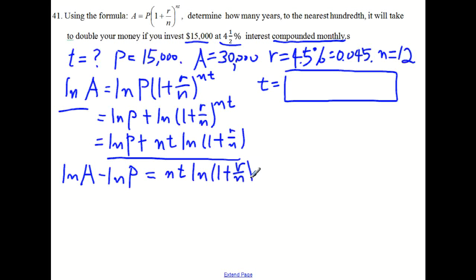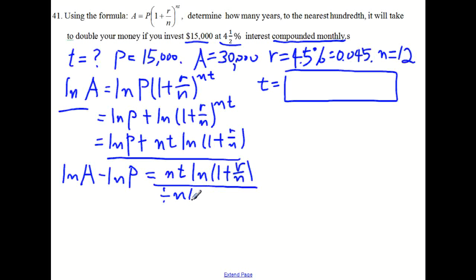Now, we have to isolate t, we have to remove these two factors, n and ln of 1 plus r over n. So we divide the equation by n times ln of 1 plus r over n. So that we get only t on the right side. So the left side, we do the same thing to the left side. We divide the left side by the same thing, n times ln of 1 plus r over n.